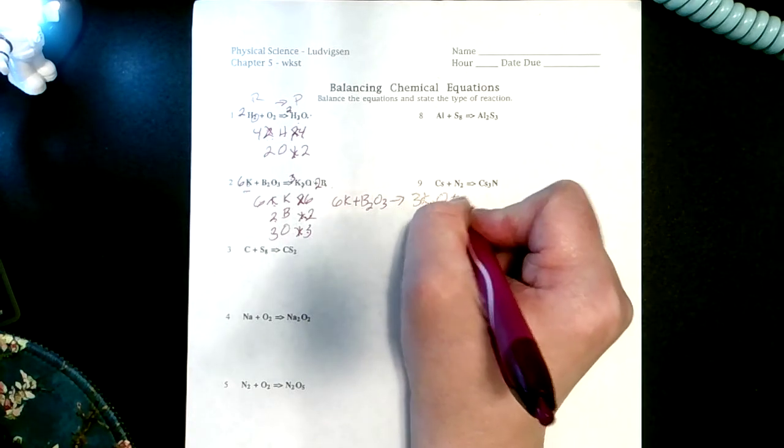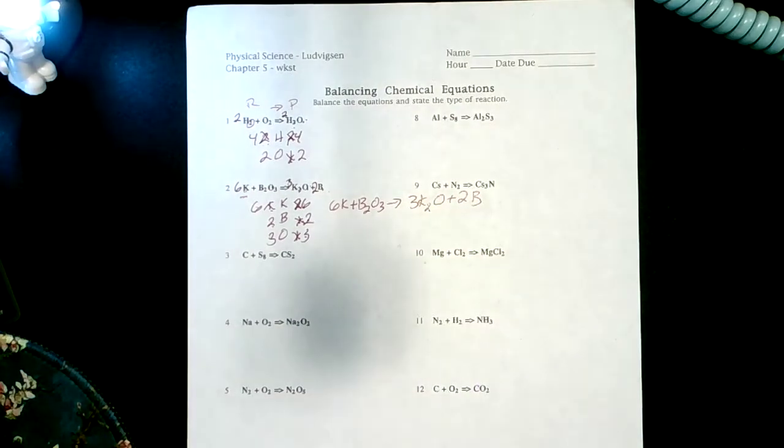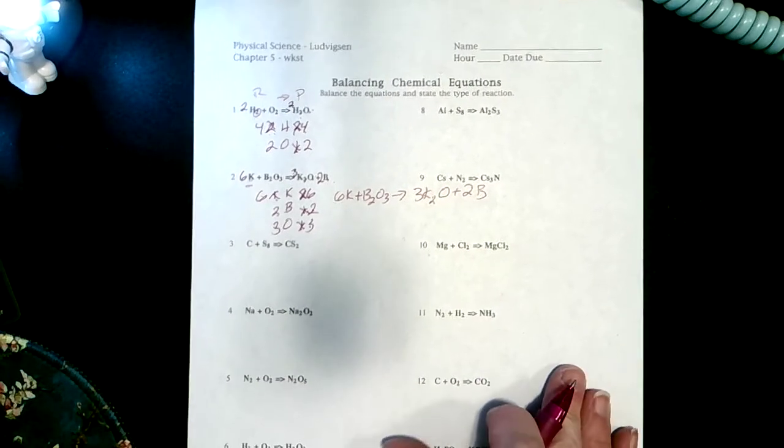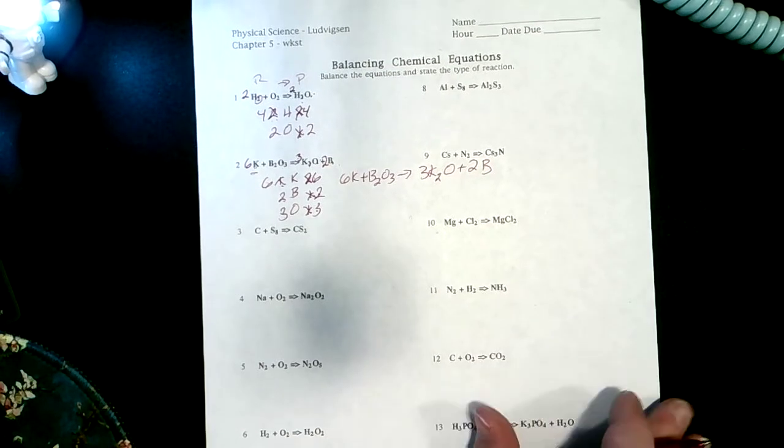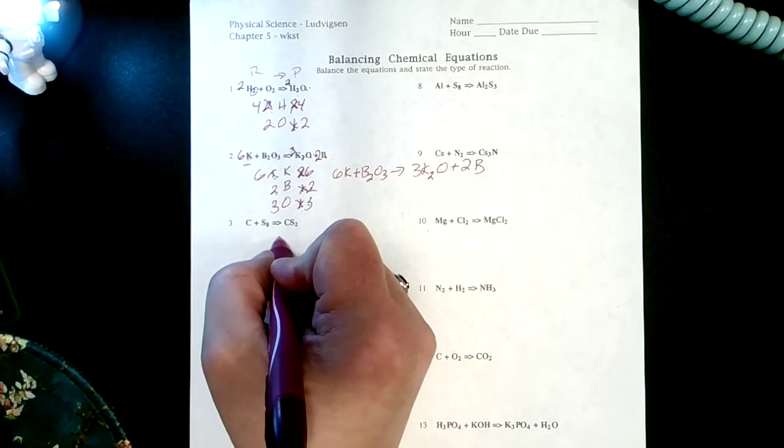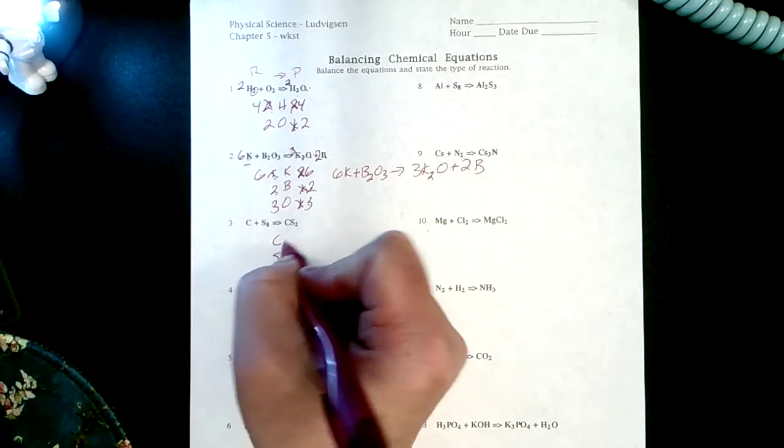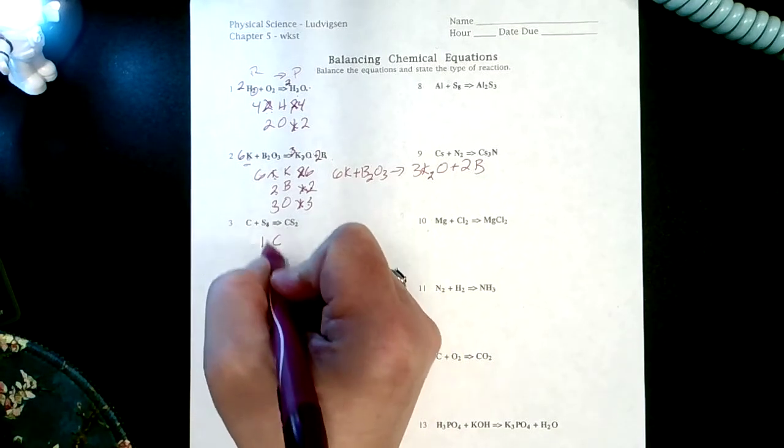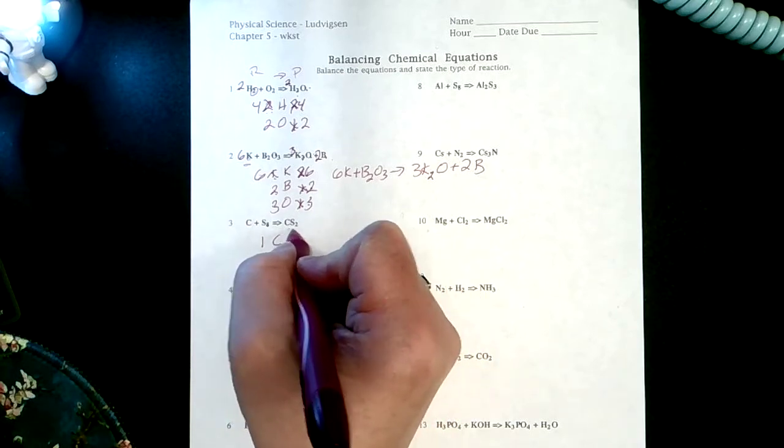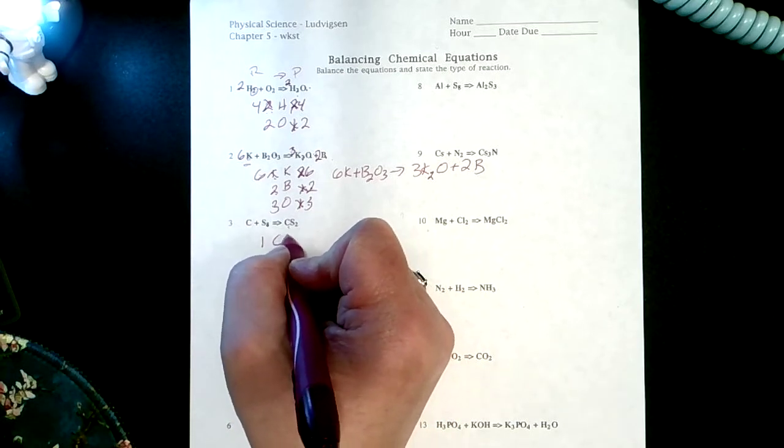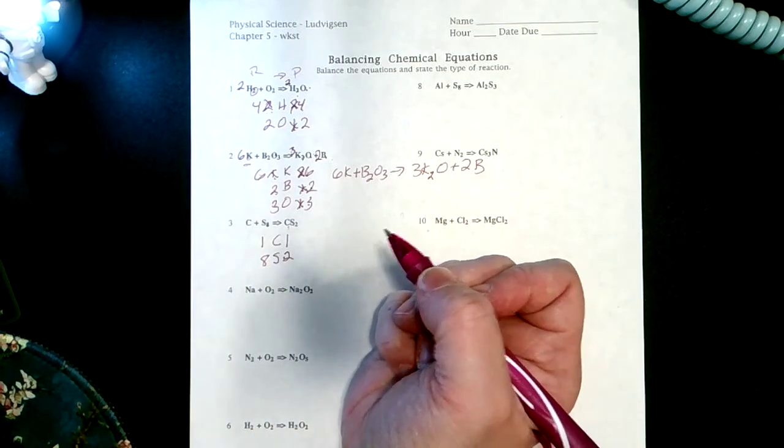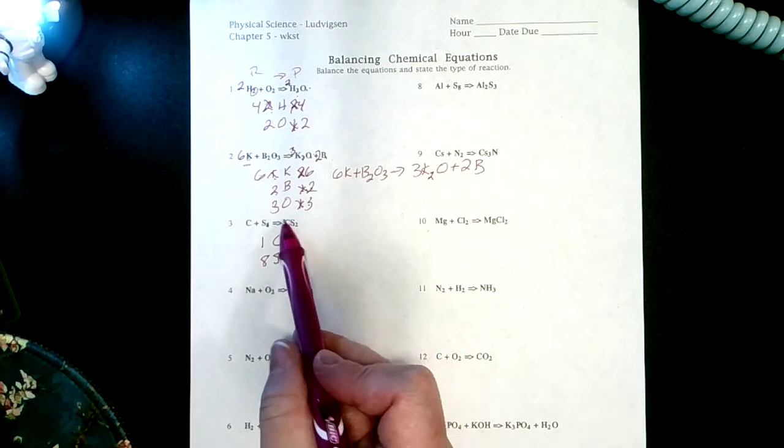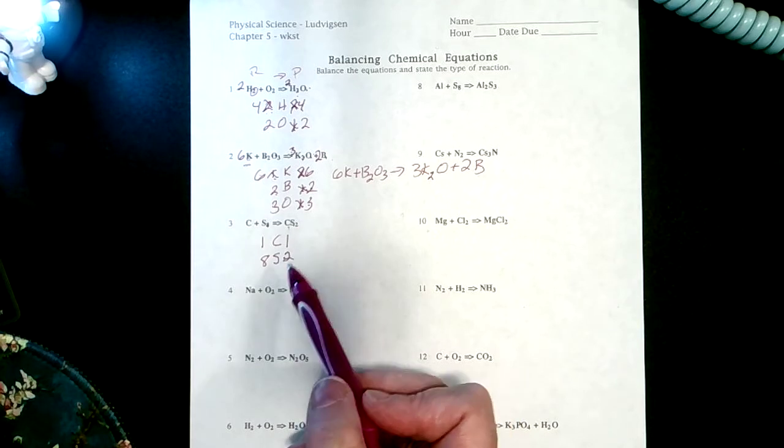We're going to do one more on this recording and then I'm going to take questions as we keep going. Let's look at number three. I have C and I have S. I have one C and eight S's on this side. On this side I have one C and two S's.